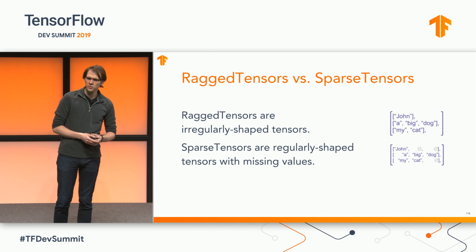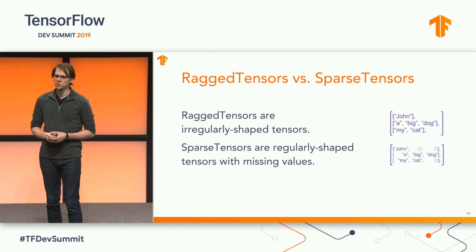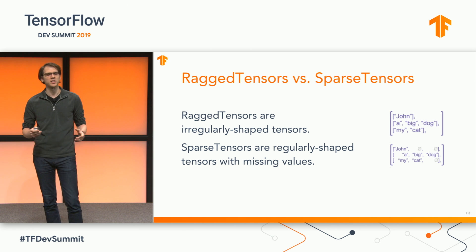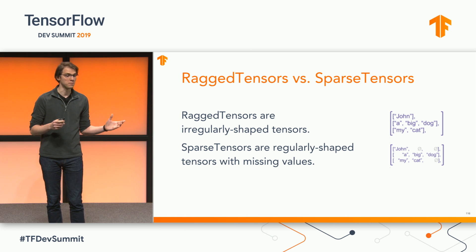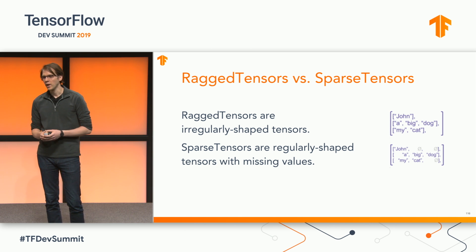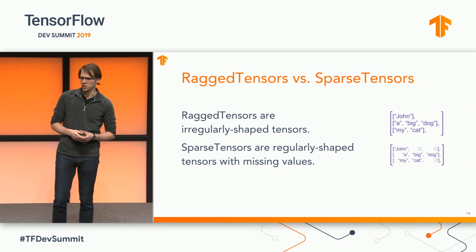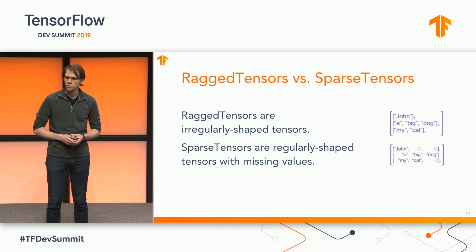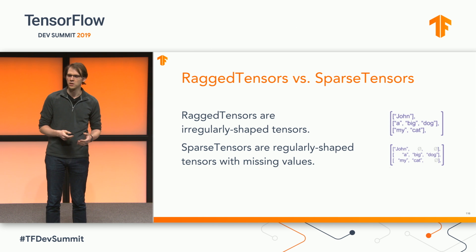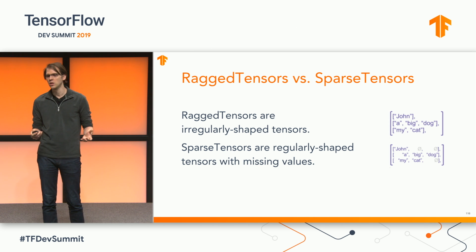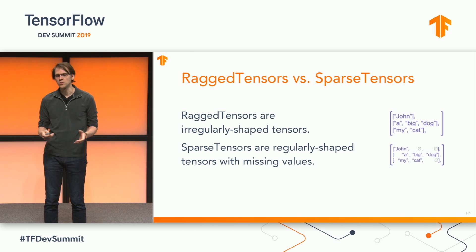Ragged tensors are different from sparse tensors in one key way. Sparse tensors make the assumption that the underlying dense tensor is regularly shaped, and unmentioned values are missing. Ragged tensors, on the other hand, make no such assumption. Here, for instance, the sparse tensor interprets the first batch element as John, null, null, while the ragged tensor interprets it as simply John.